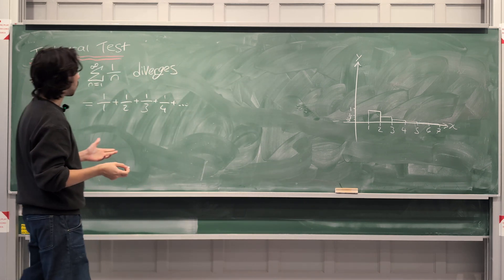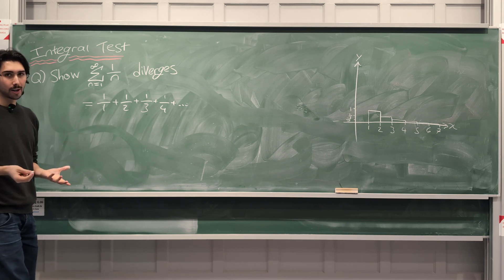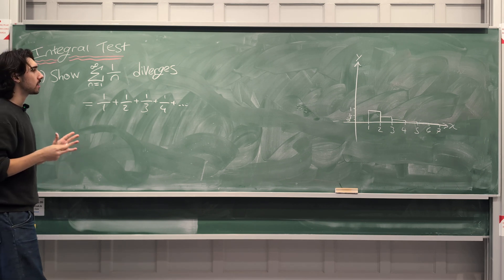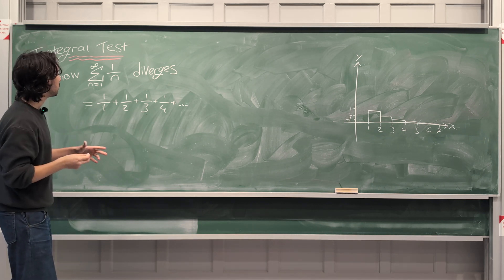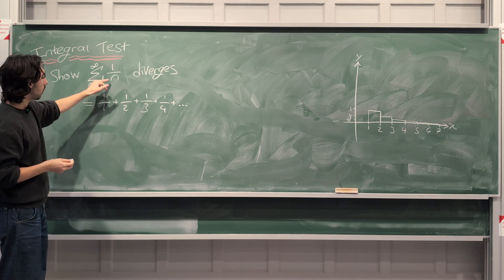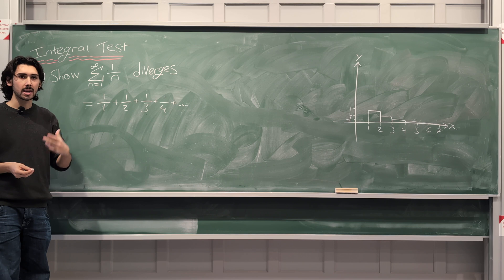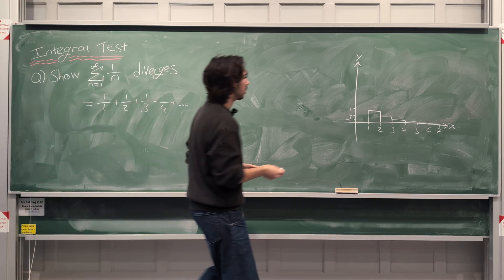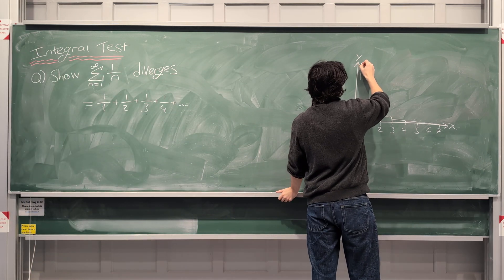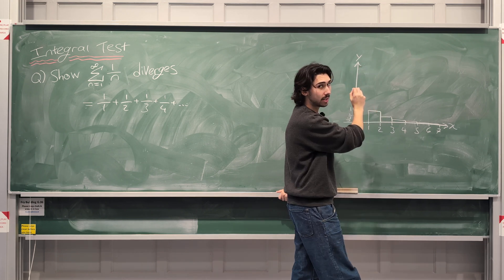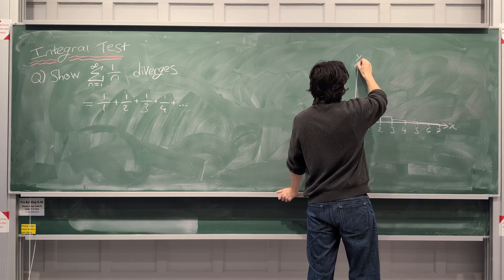Now what can we do with this? This is where the integration comes in. So what we can do is we can take the same function, so we've got the function 1 over n, but we can draw the graph of 1 over x, y equals 1 over x, on top of this. So y equals 1 over x looks like this, and I'm going to be very careful with how I draw it.